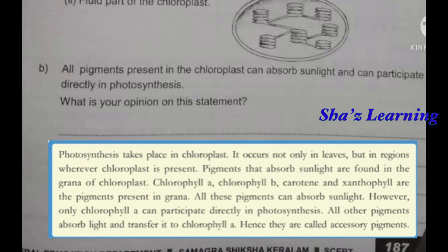Chlorophyll A can participate directly in photosynthesis. All other pigments — chlorophyll B, carotene, and xanthophyll — can absorb sunlight and transfer that energy to chlorophyll A, which then uses it in photosynthesis.